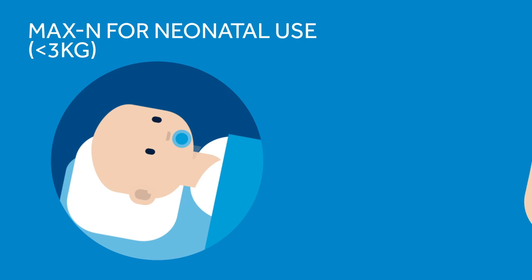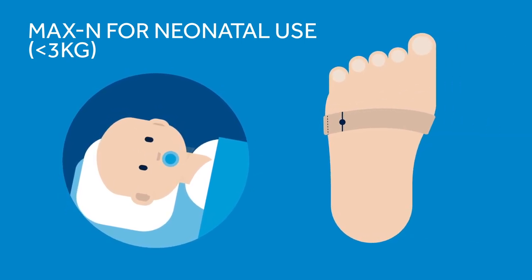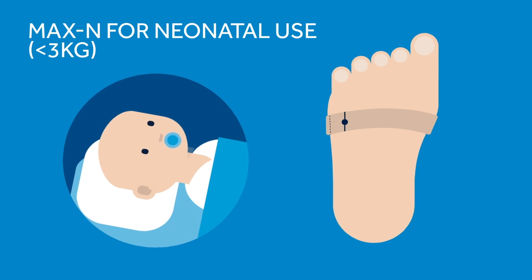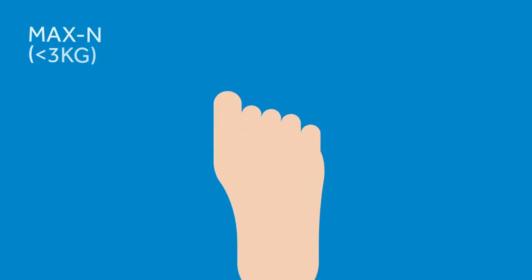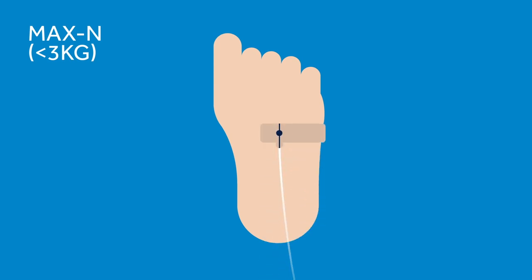Alternatively, the MAX-N sensor can be used on a neonate's foot, as seen here, or the palm of a neonate's hand. Do not place sensor on the wrist or ankles. Position the sensor so the dashed line is centred on the lateral edge of the foot or hand. Ensure the cable runs along the sole of the foot. Wrap the sensor around the site without stretching the tape, so the optical components directly oppose each other. Anchor the cable with a piece of medical grade tape.